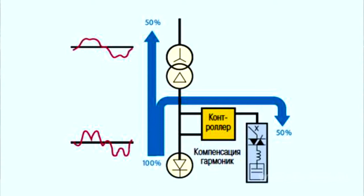Power factor correction can also improve voltage stability. Due to the reduction of current flow, the cable cross-section can be reduced as well, or additional power can be transmitted via a constant cross-section cable in the existing system. Transmission losses are reduced as transmitting and switching devices operate with a lower current.